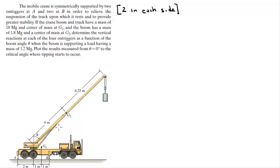Okay, so first let's draw on the free body diagram the weights we have. This weight at G1, let's call it weight 1. This weight at G2, let's call it weight 2. And this weight being lifted by the machine — W3. Now we have the mass of each one, so we have to calculate the weights: W1, W2, and W3.